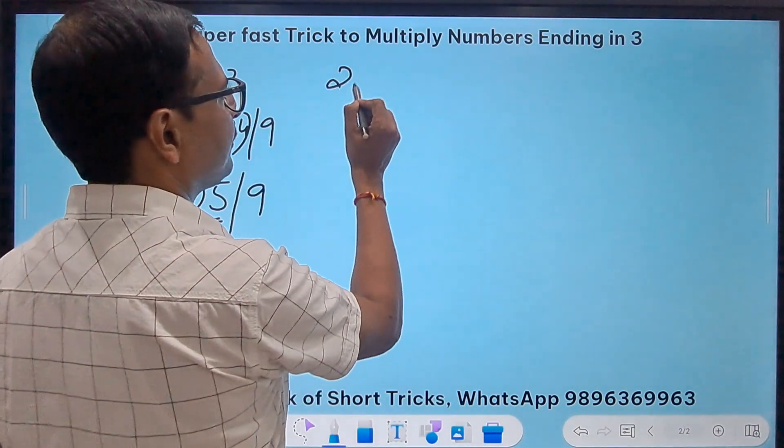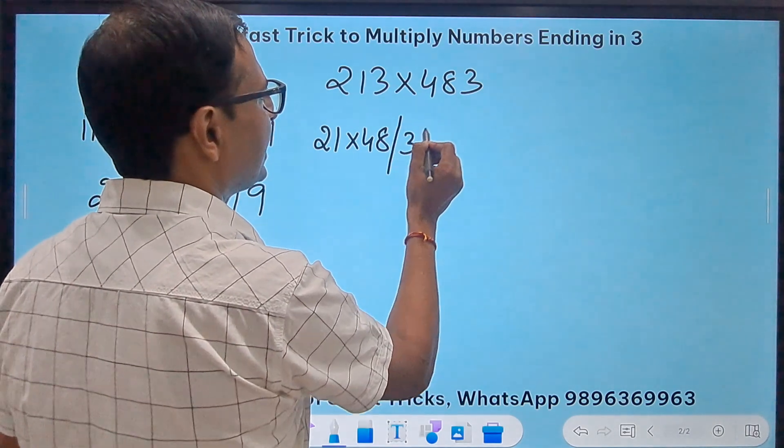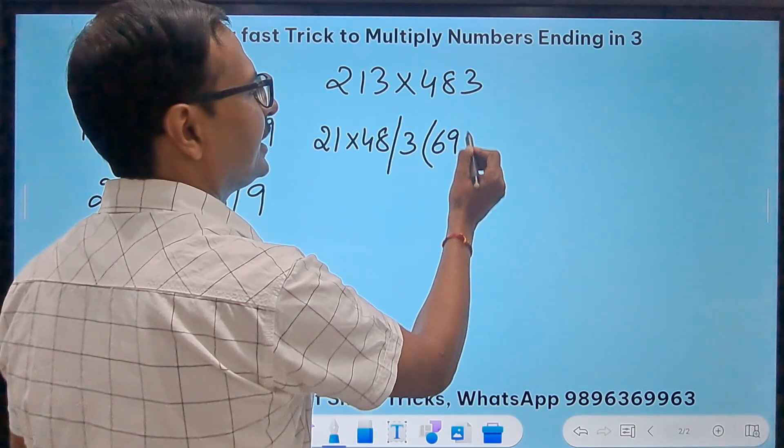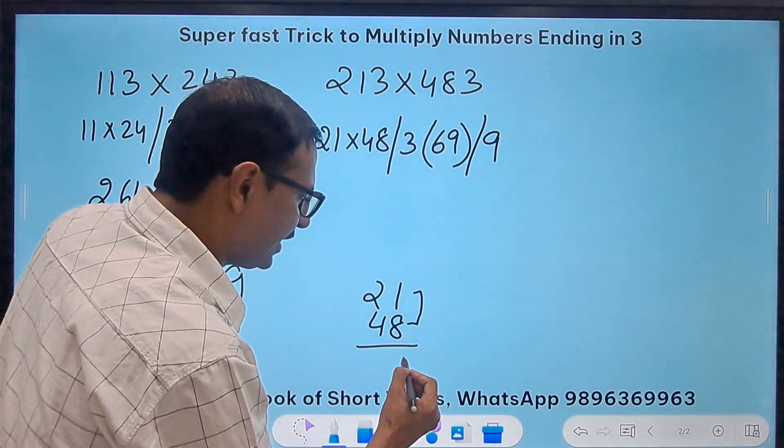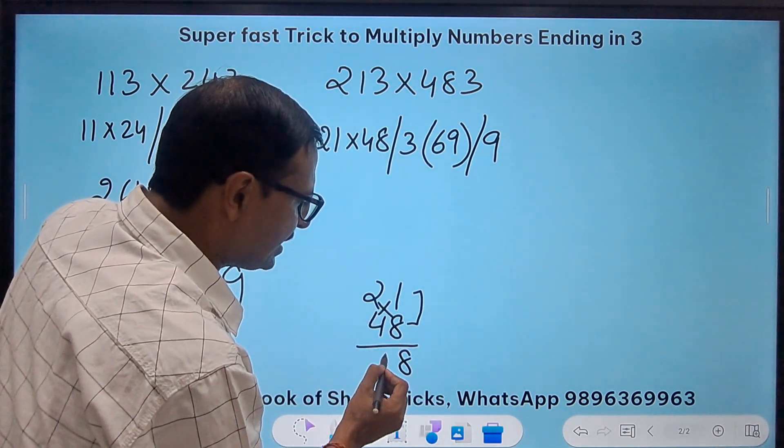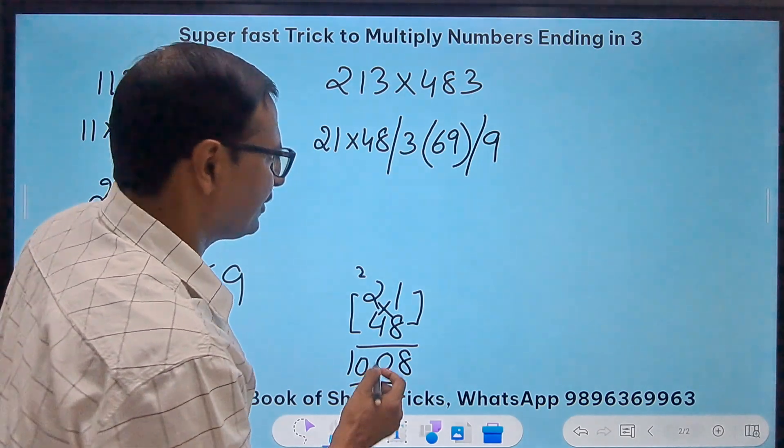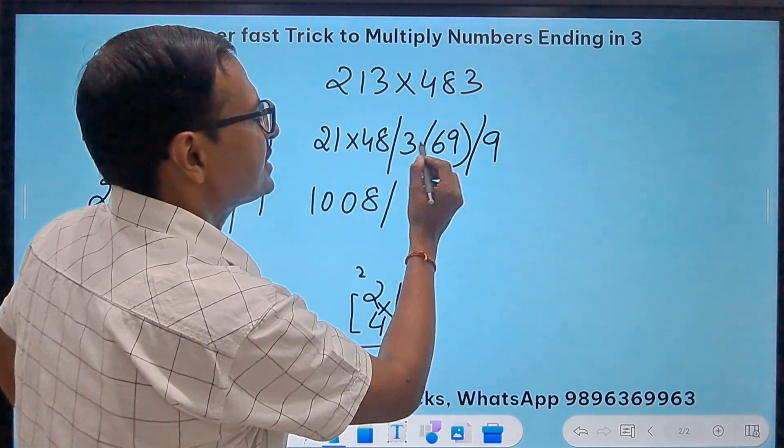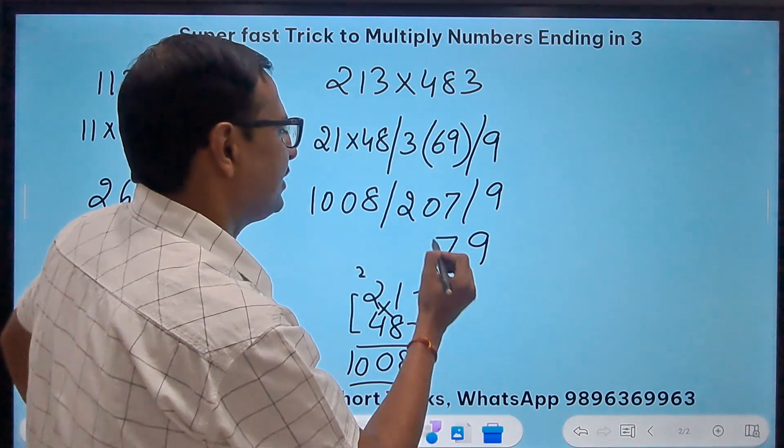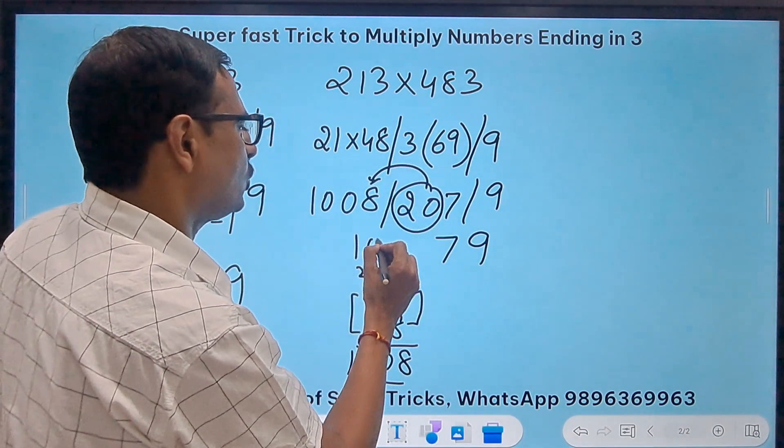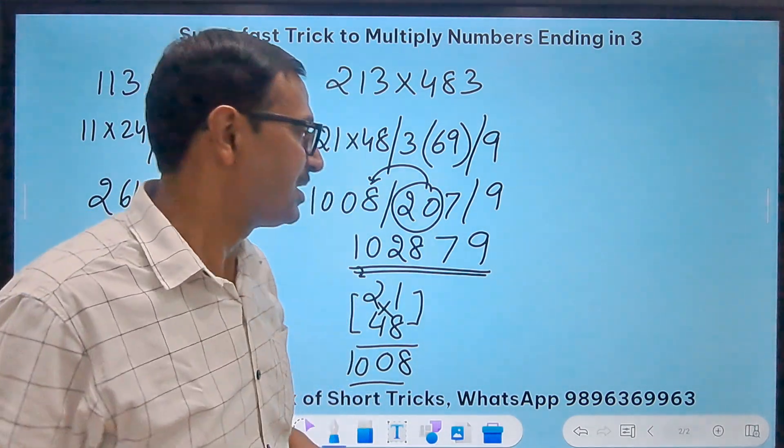Now you see how much time we are saving. Let's take 483 and 213. 213 times 48, so this is 21 into 48, then 3 times the sum of these two is 69, and finally the 9. Now how do you do 21 times 48? For that I will use the vertical and crosswise. This is 8, 8 ones are 8, 16 and 4, 20, 0, 2 carry, 8 plus 2 is 10. See, 1008 is the product. Then 3 times this is 180 plus 27 is 207, and finally the 9. So 9, 7, the 20 added to this gives me 1028, and the answer is 102879. Is it correct? Oh my god, that's accurate, very accurate.